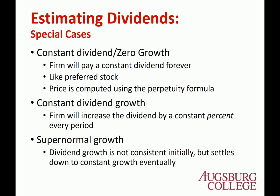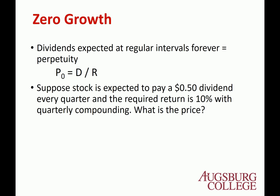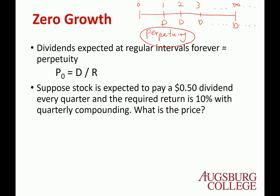Let's look at special cases. The first case is constant dividend — zero growth, so growth rate equals zero percent. If the firm does not change the dividend amount, this infinite problem is called a perpetuity. If you remember from Chapter 5, a perpetuity has the same amount of payment, evenly spaced, at the same interest rate, forever. The present value of a perpetuity is simply PMT divided by interest rate.